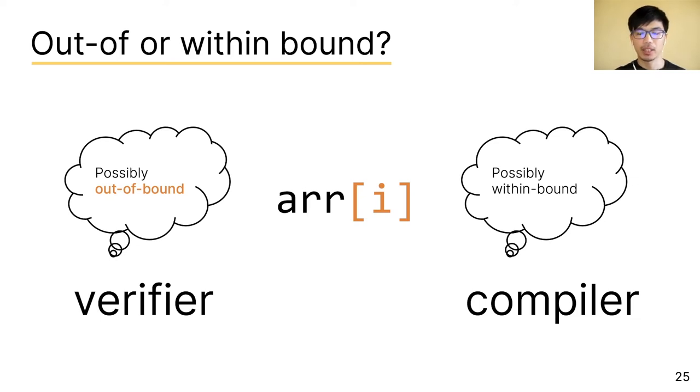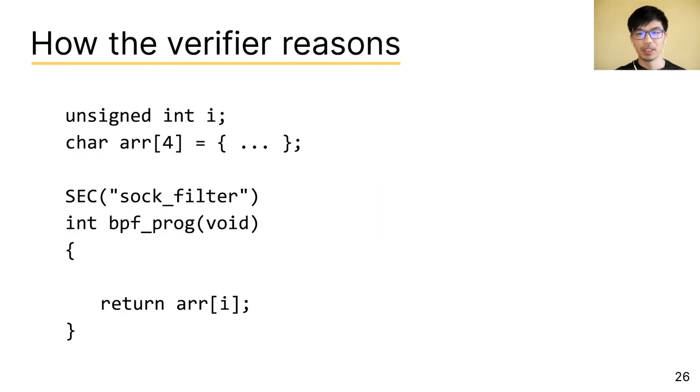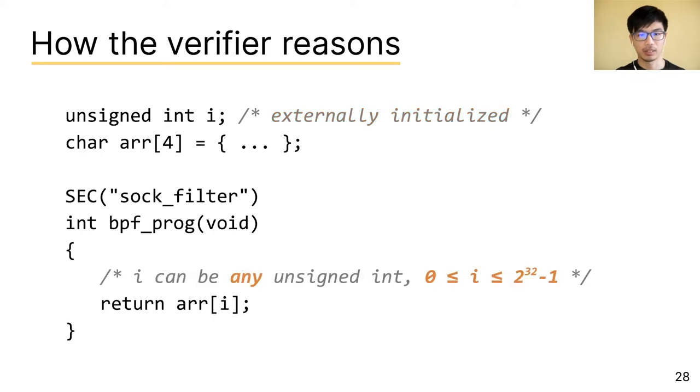But the verifier is not drawing that conclusion out of thin air. The way the verifier reasons is like this. It sees that i is externally initialized. So it reasons that i can just be any unsigned integer value, which means i can be a value between 0 and 2 to the 32 minus 1.